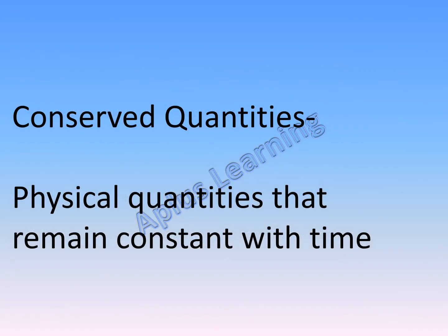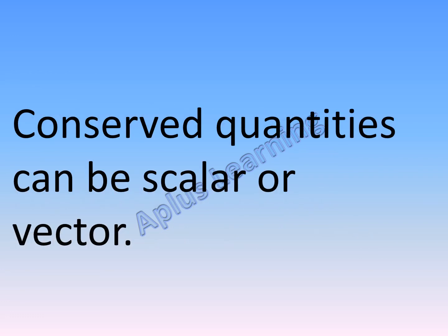Now let us see what conserved quantities are. Physical quantities that remain constant with time are called conserved quantities. Conserved quantities can be scalar or vector. Scalar quantities have only magnitude, whereas vector quantities have both magnitude and direction. An example of a scalar quantity is energy, and an example of a vector quantity is total linear momentum.